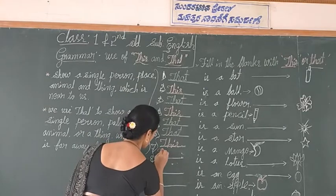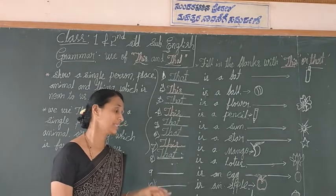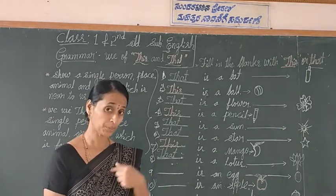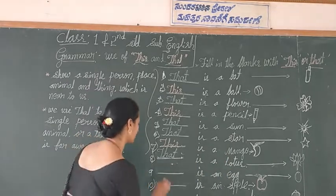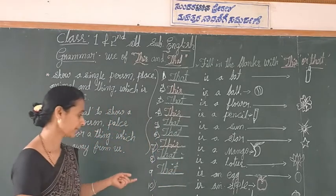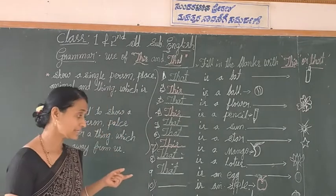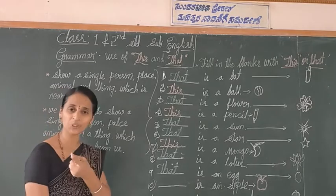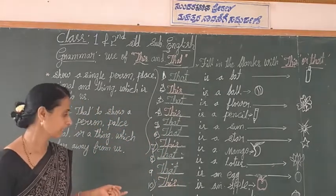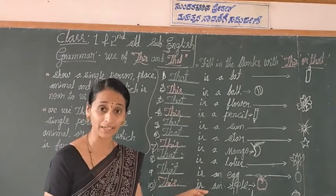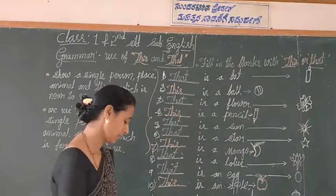Ninth one: dash is an egg. Is the egg near to me or far away from us? Yes, the egg is far away from us, so we can use 'that'. Tenth one: dash is an apple. Tell me — the apple is near to me. Yes, of course, we can use 'this'. Last one: dash is a cupcake. The cake is far away from us, so we can use 'that'.